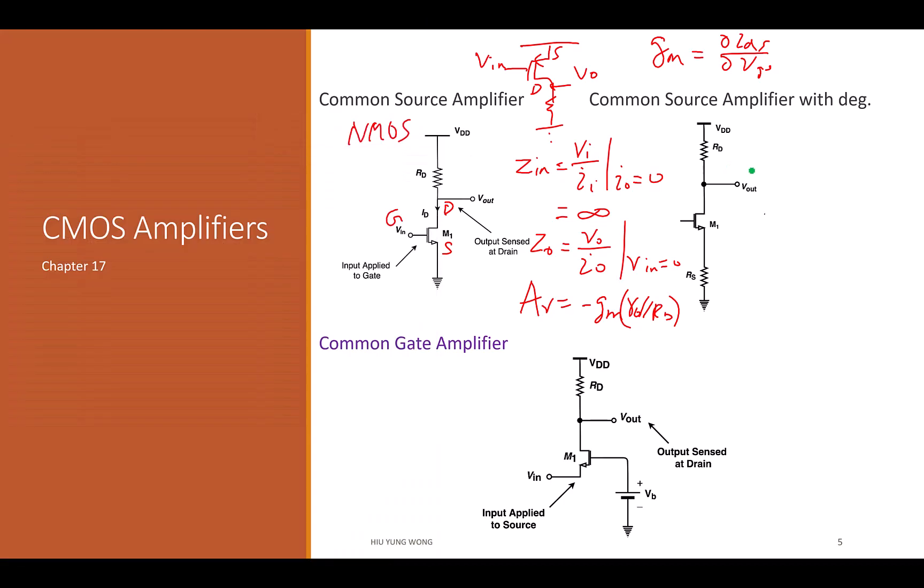Then we talk about common source with degeneration. We also spent a lot of time to derive the equation. I hope you know how to derive it. But after that, you copy to a cheat sheet. Now you should tell me what is the input impedance of a common source with degeneration. Just look at this circuit. This is Vin. What is the input impedance? Infinite. Why? Because again, Vin over Iin and it goes to the gate. Current is zero. Is this okay?